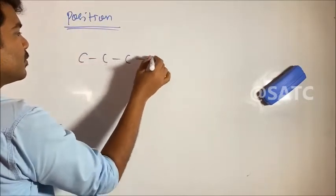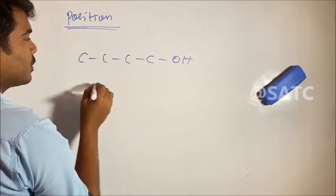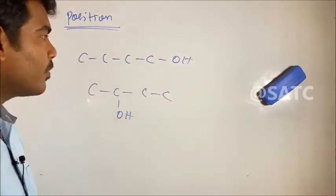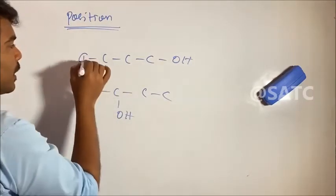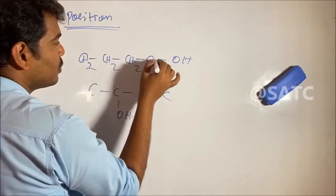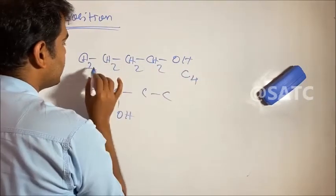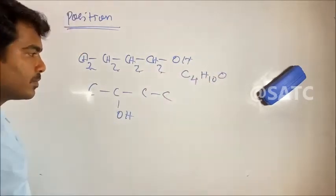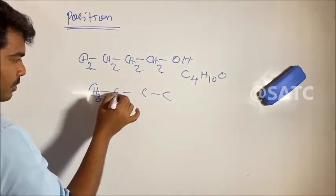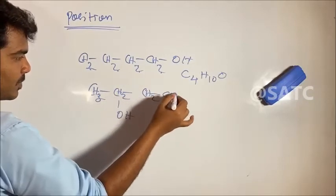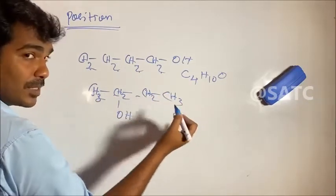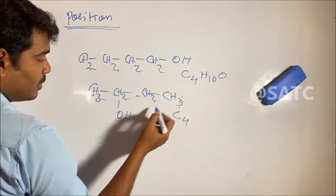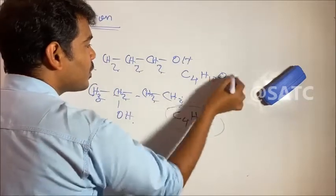Now for position isomers: 1, 2, 3, 4 carbons. We make molecules: CH3, CH2, CH2, CH2 — 4 carbons — with 3, 2, 5, 6, 7, 8, 9, 10 hydrogens and one oxygen. Another arrangement: CH2, CH3 — 4 carbons — with the same hydrogen count and oxygen. The molecular formula is the same.